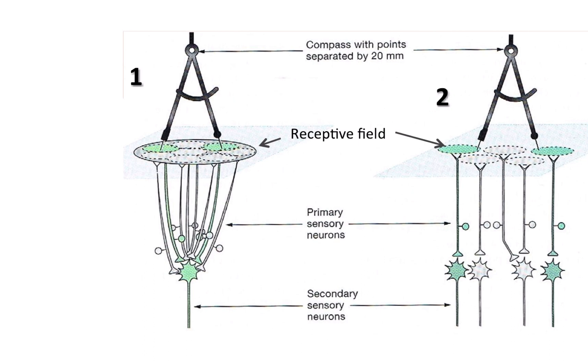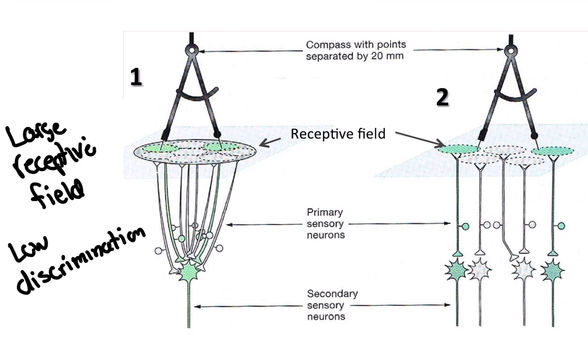So we say is that this has a large receptive field. Low discrimination. Why is it large receptive field? Well, this one neuron is covering a large distance. The receptive field where all the receptors are is converging onto one neuron. And the receptive field is quite large for one neuron. Low discrimination because even though we have a large receptive field, that does not mean we have a high discrimination. Because if this entire section here is only talking to one neuron, I could put 500 needles here and I would only feel one needle. This one neuron cannot tell the difference of where the stimuli are coming from because they're all talking from the same place.